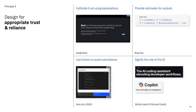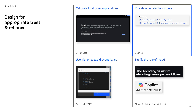Trust and reliance are extremely important issues in any AI system, and we recommend a few ways design can be used to help users calibrate their trust. The first is to make it clear what your application can and cannot do by explaining its capabilities and limitations, which is what Google Bard did when it was first released. It's also really important to provide rationales for the outputs produced by a generative model. One way to do this is to show users the model's chain of thought, and for use cases like Q&A, showing source attributions is really important — this is what Bing Chat does by citing its sources.